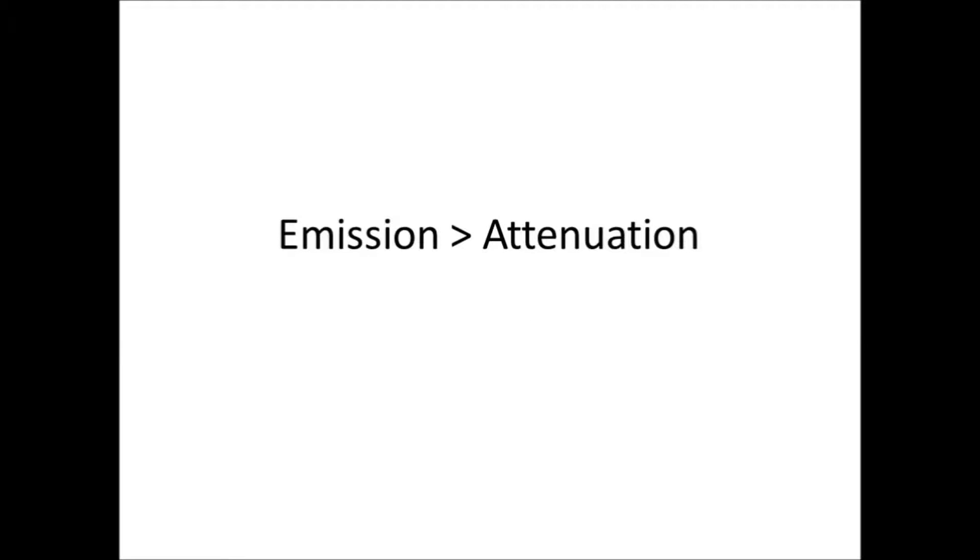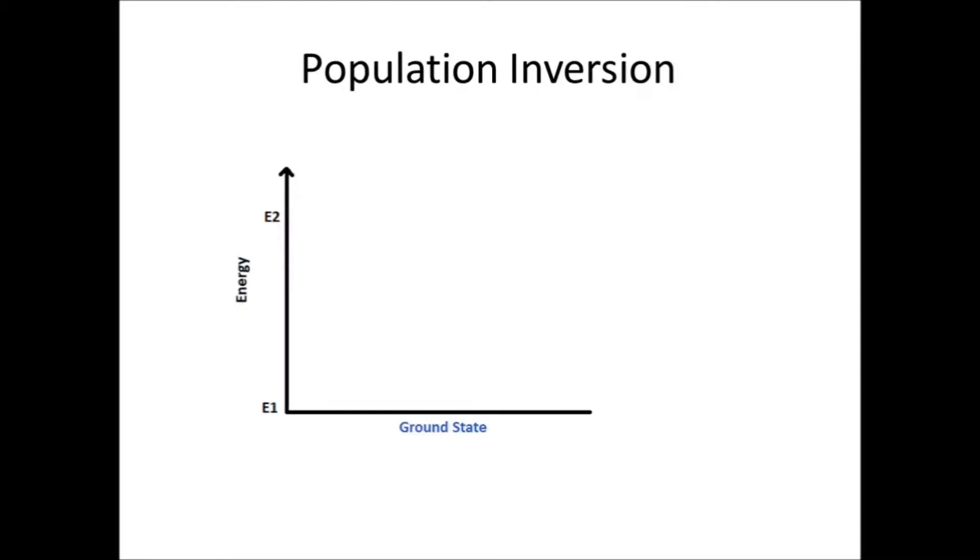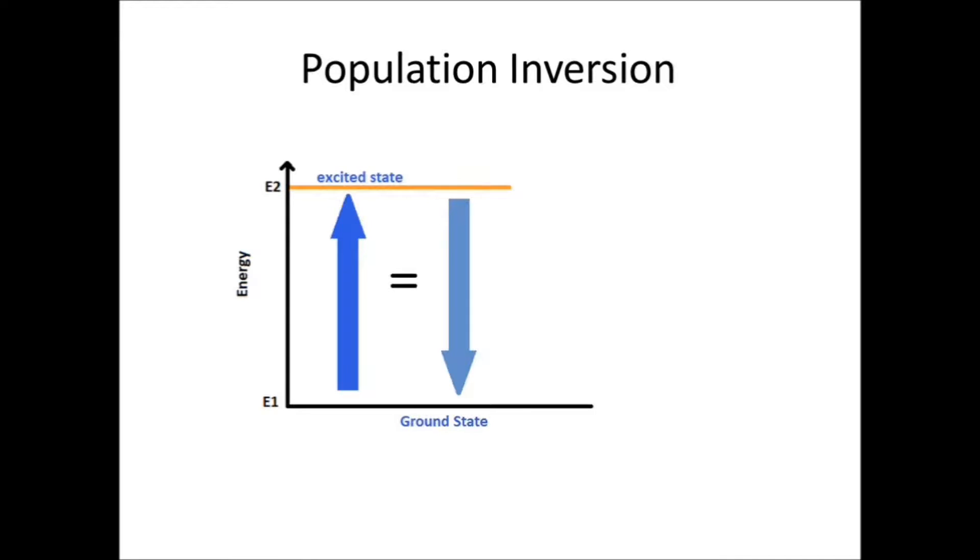Population inversion and why we can't use two-level lasers. For emission to occur, more photons have to be emitted than attenuated in the medium, which means the rate of stimulated emission must be greater than the rate of absorption. To allow more emission to occur, we create a population inversion to increase the number of atoms in the excited state compared to the ground state.